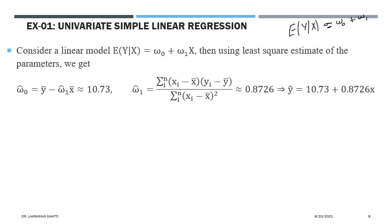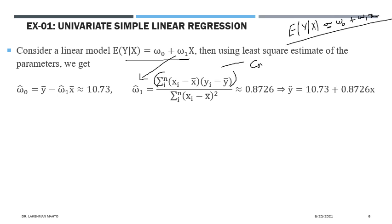We know from the previous derivation that the least square estimator of ω₁ is: ω̂₁ = estimated covariance of x and y / estimated variance of x. This is the ratio of the second moment quantities — the estimated covariance of x with y in the numerator and the estimated variance of x in the denominator.